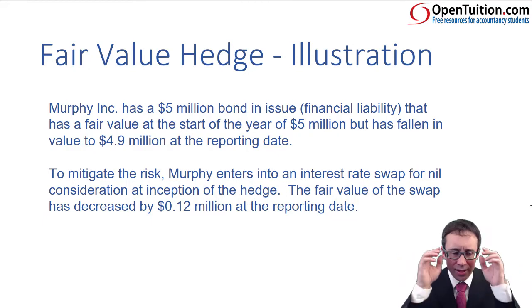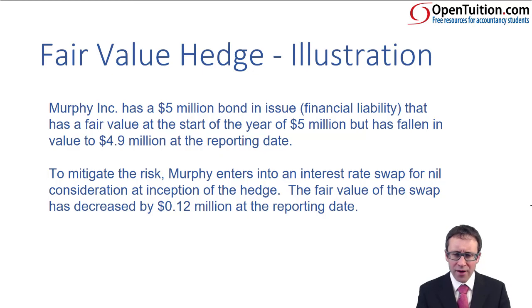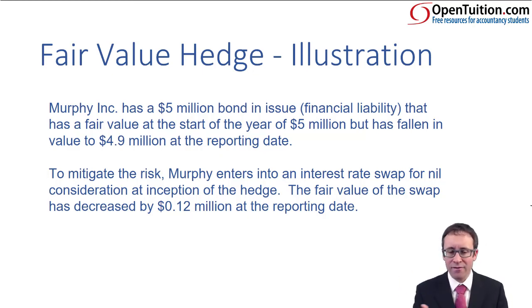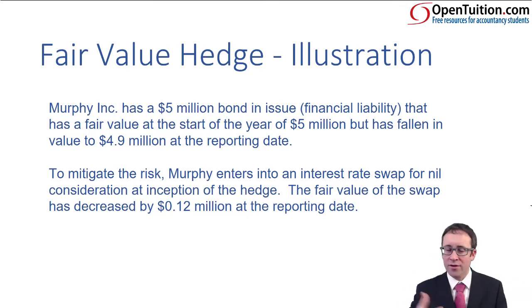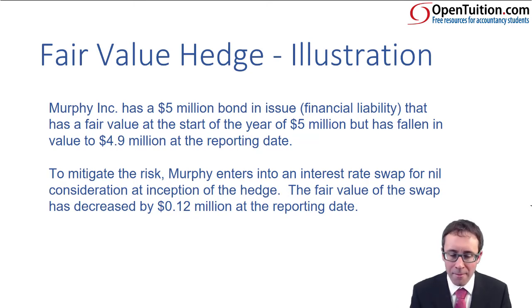Let's pull it together and have a look at an illustration. So we've got here Murphy Inc., which has a $5 million bond in issue. They have raised finance via debt finance and taken in $5 million — debit bank $5 million, credit financial liability $5 million. It has a fair value at the start of the year of $5 million, but for whatever reason it has fallen to $4.9 million at the reporting date.